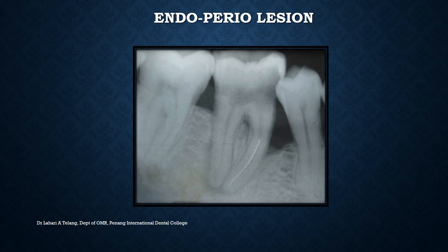The endo-perio lesion will be discussed in detail in the perio chapter, but essentially when a tooth is endodontically involved as well as periodontically involved, the radiolucency from endodontic involvement and the radiolucency caused by periodontic bone loss mix and merge with each other, forming a larger radiolucency. The terminology used is endo-perio lesion.